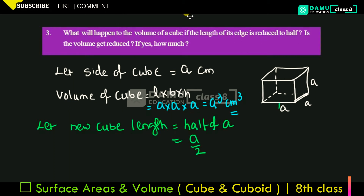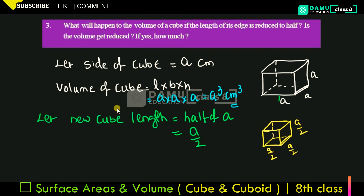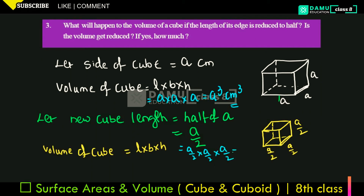You can draw the new cube. The new cube's length, breadth, and height are all A by 2. So volume of new cube will be equal to length into breadth into height, that is A by 2 into A by 2 into A by 2, which equals A cube by 8 centimeter cube.